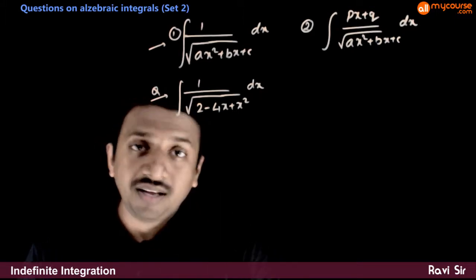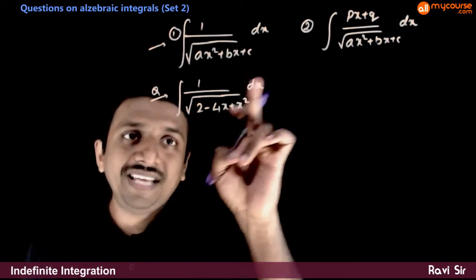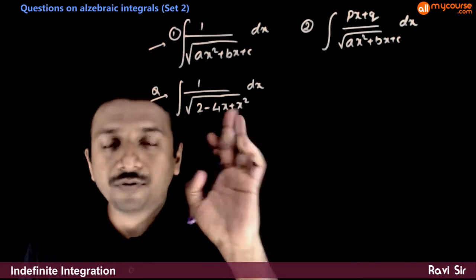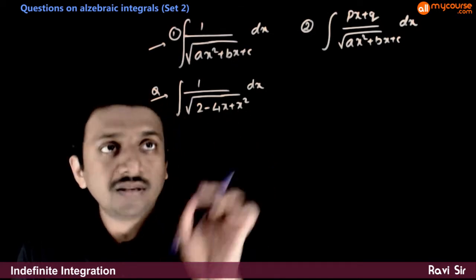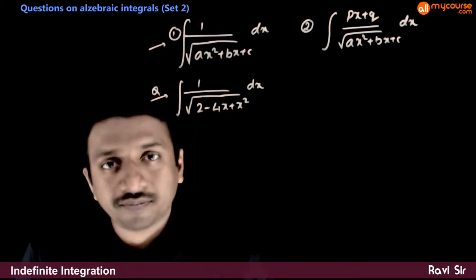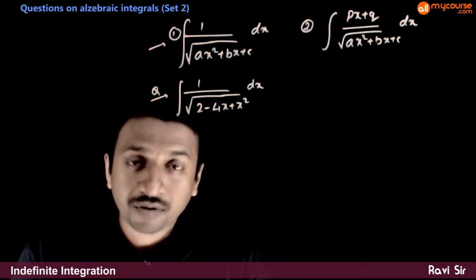So, next let us say that you need to integrate this: integration of dx by root of 2 minus 4x plus x square. This is of the form 1 by quadratic. Again, the process is straightforward.